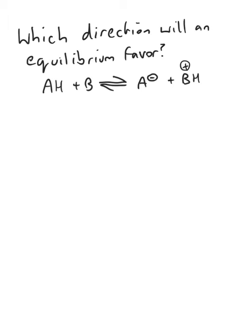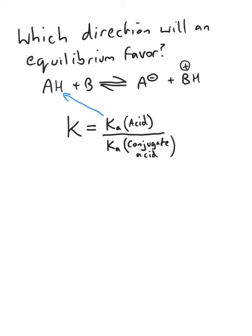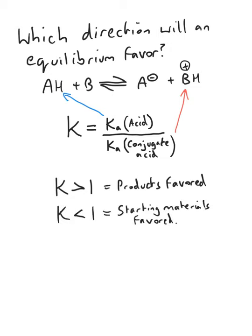Another neat thing we can do with the Ka's of acids and conjugate acids is to figure out the direction an equilibrium will favor. To calculate the equilibrium constant in this case, we just need to divide the acidity constant of the acid by the acidity constant of the conjugate acid. If the equilibrium constant is larger than 1, the right-hand side is favored, or the product side. And if the equilibrium constant is less than 1, then the left-hand side is favored, or the starting materials are favored.